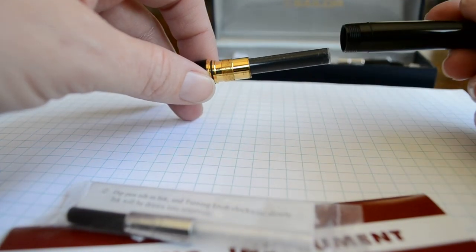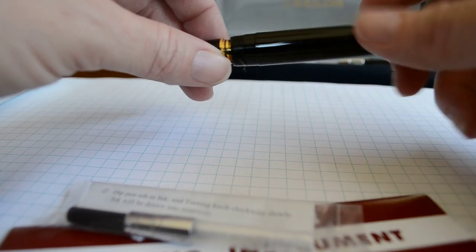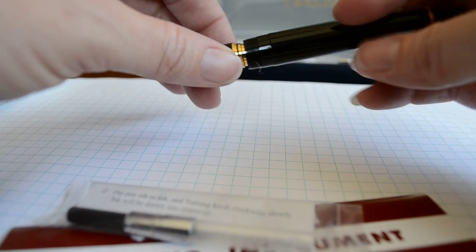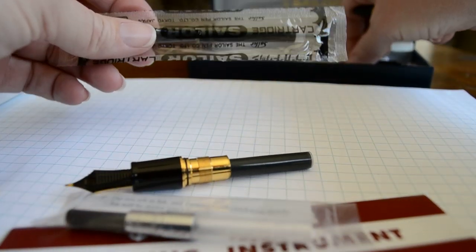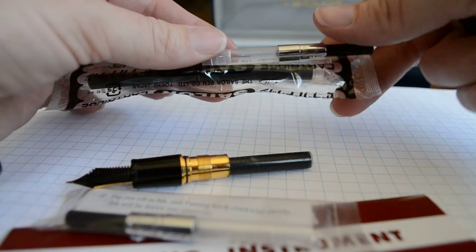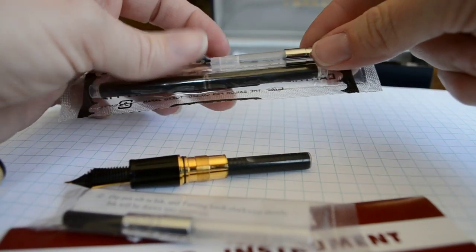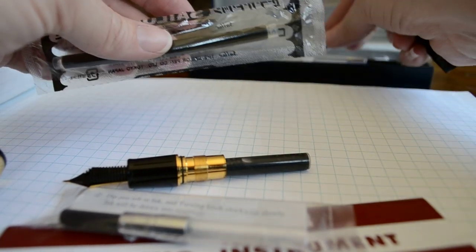Or you can just traditionally scribble on your page a little bit until it starts. The cartridges themselves appear to hold a little bit more ink than the converter. If you're stacking them side by side here, it looks like it's going to hold a lot more ink than the converter.